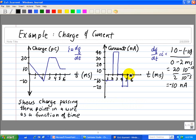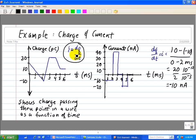Hopefully, this illustrates the relationship between charge and current through this derivative, i equals dq dt. Again, current is the change of charge at a point in time with respect to time.